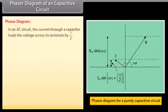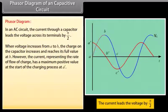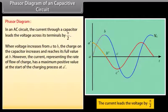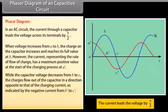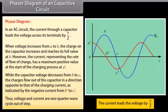Phasor diagram of a capacitive circuit: in an AC circuit, the current through a capacitor leads the voltage across its terminals by π/2. When voltage increases from A to B, the charge on the capacitor increases and reaches its full value at B. However, the current, representing the rate of flow of charge, has a maximum positive value at the start of the charging process at A', while the capacitor voltage decreases from B to C. Thus, voltage and current are one quarter wave cycle out of step.